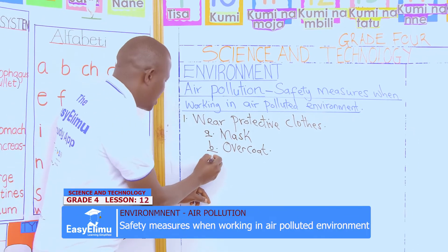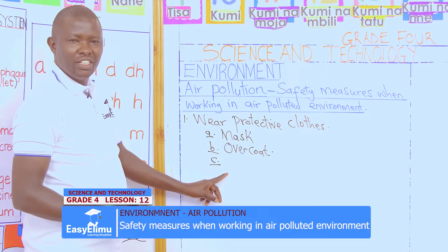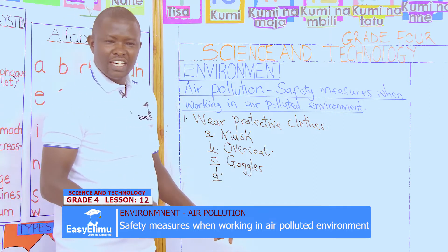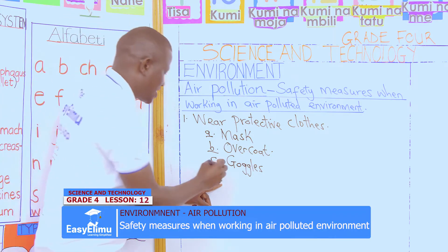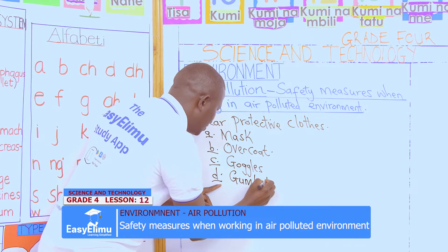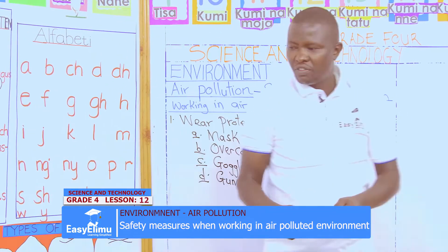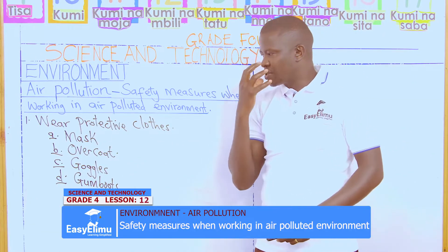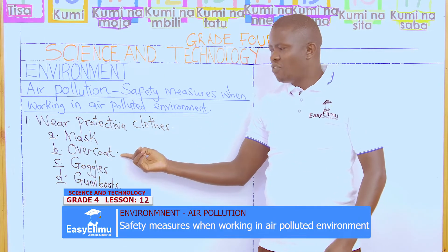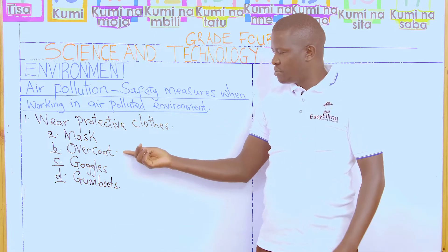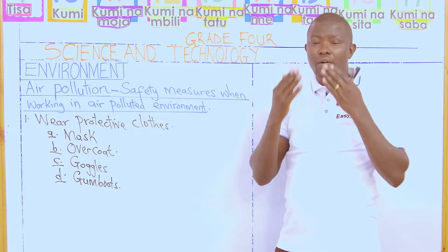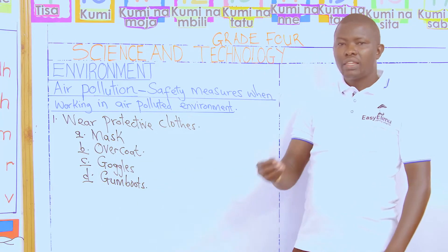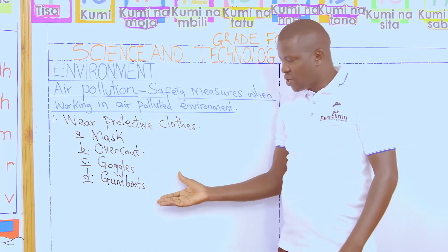Victoria, what can you see? Goggles. Correct. What else is being worn from our pictures? Gum boots. These are some of the protective gear — parts of our clothing to wear in sites which are air-polluted. A mask will protect dust from entering our nose. An overcoat will protect us from dirt. Goggles will protect dust from entering our eyes. Gum boots will also protect us as we work in those areas so there is no stepping on things that will injure us.